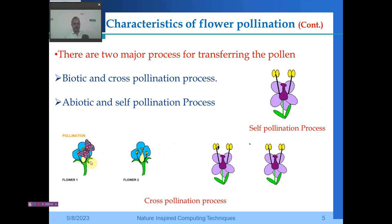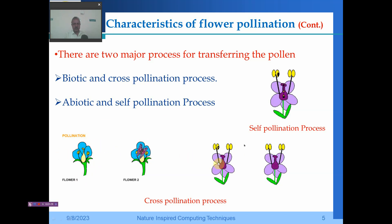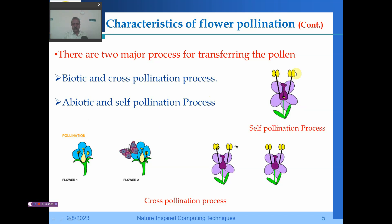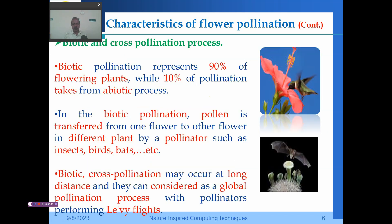From the diagram we can clearly understand: here is one flower and here is another flower — this is the case of cross pollination, where a butterfly sits on one flower, carries the pollen, and deposits it on another flower. In the self pollination process, as shown in the diagram, the pollen falls directly, which may be due to wind or water.